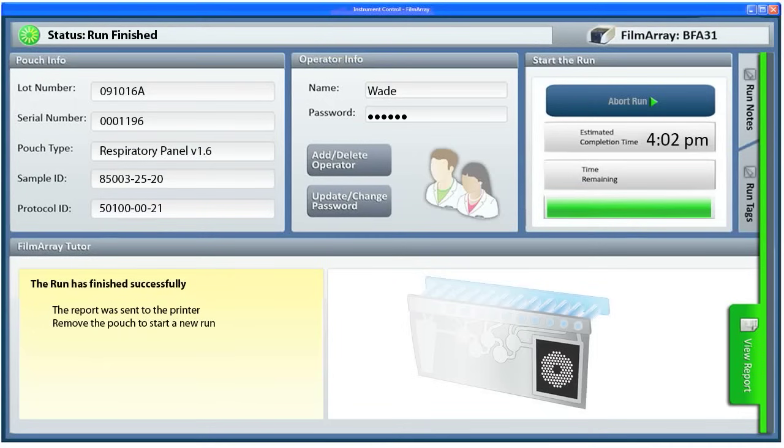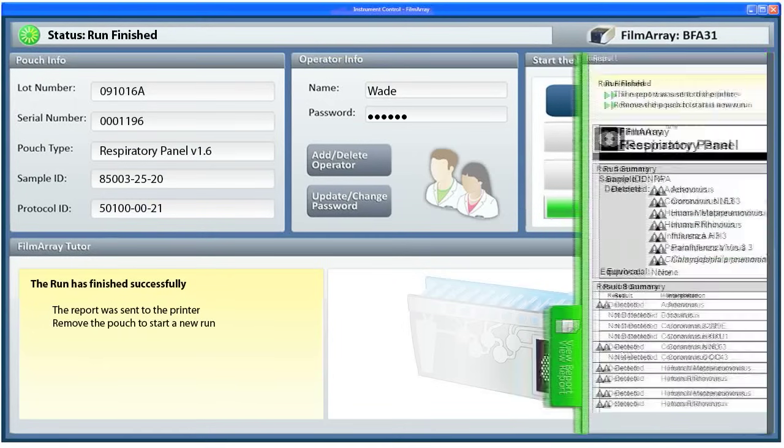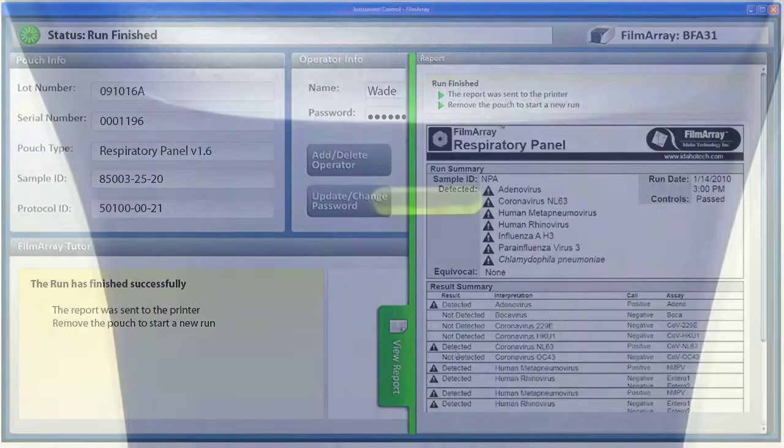The FilmArray software processes the data and makes a positive or negative call for each organism. These results are provided in one easy-to-read report.